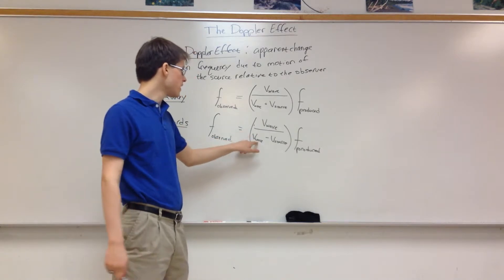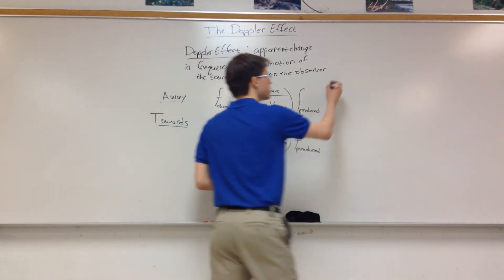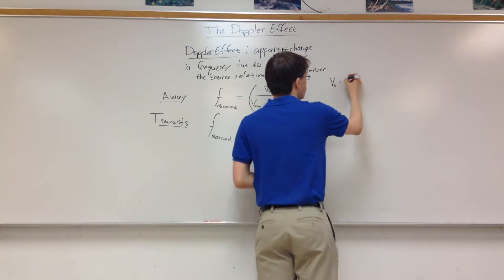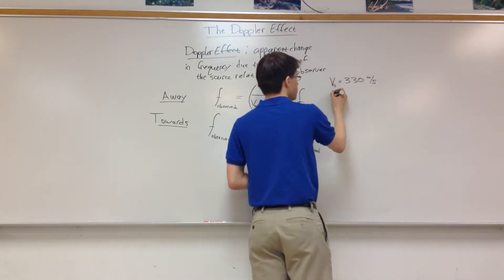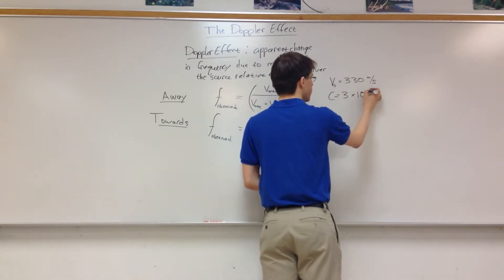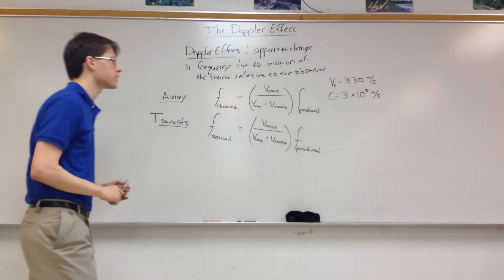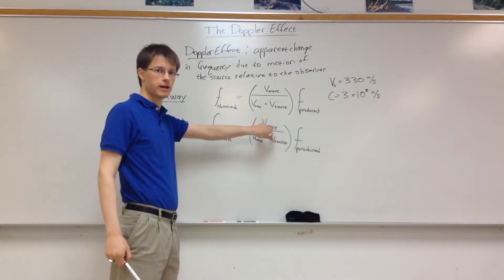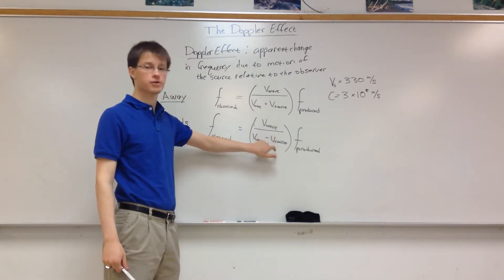Now the velocity of the wave is almost always going to be one of two things. We're generally going to only work with sound. And the velocity of sound in air, roughly room temperature is about 330 meters per second. And the velocity of light is the other type of wave we work with. And that's 3 times 10 to the eighth meters per second. Light is wicked fast. So those would be the velocity of the wave. That's what goes in here. However fast the wave itself travels. Then you add or subtract the velocity of the source from that.